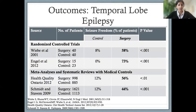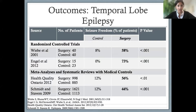Thinking about temporal lobe epilepsy, our major workhorse is the temporal lobectomy — at least historically. It is the most common surgical procedure we practice for temporal lobe epilepsy by far, and it's also the procedure we have the most rigorous data for. You can see here at the top of this chart that there are two randomized control trials for temporal lobectomy in temporal lobe epilepsy.